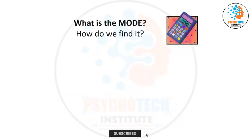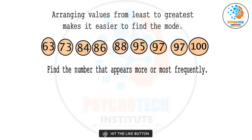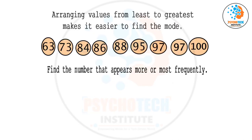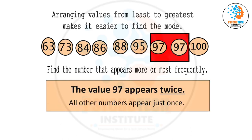Mode is the most frequently occurring number — the one that is repeated the maximum number of times. It's not necessary that there is only one mode; there may be more than one mode if multiple numbers are repeated the same number of times.